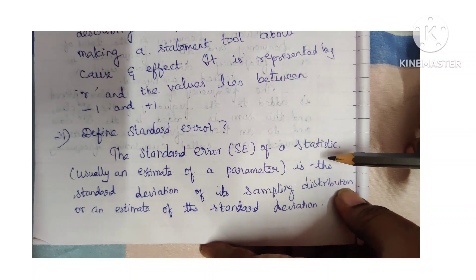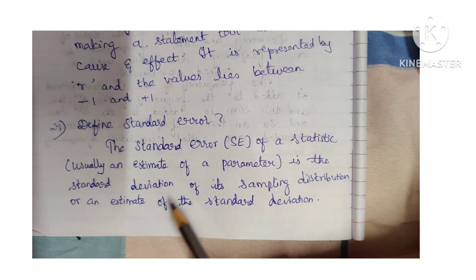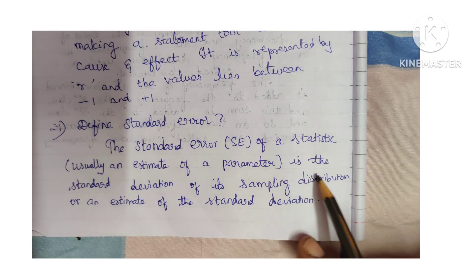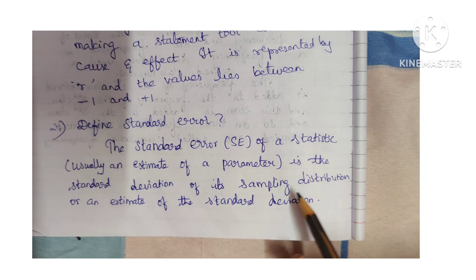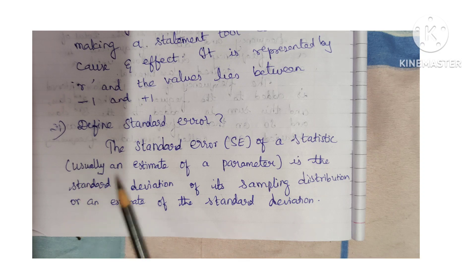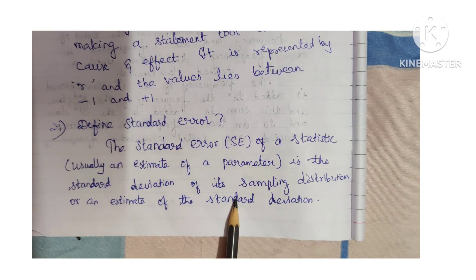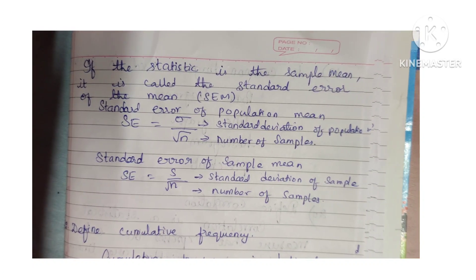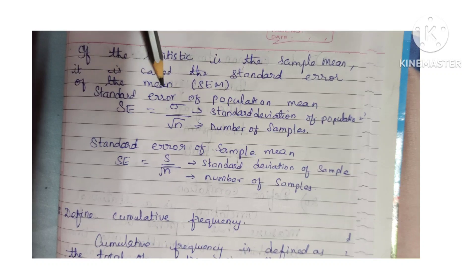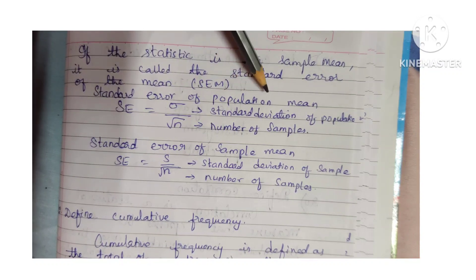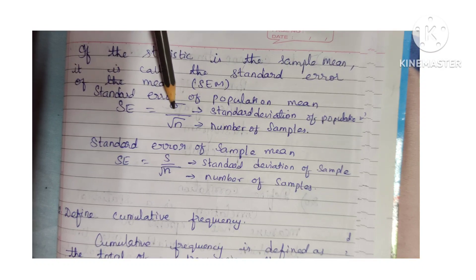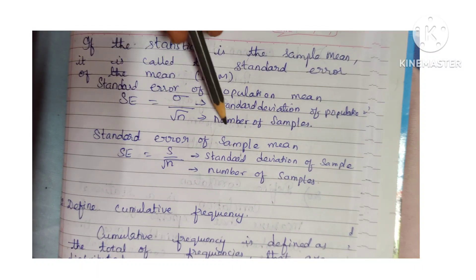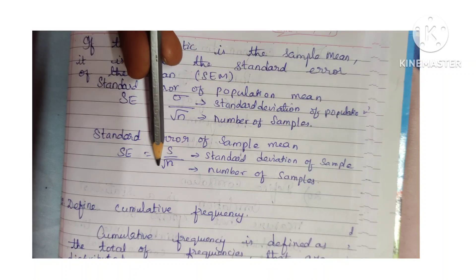Define standard error. The standard error of a statistic is usually an estimate of the parameter — it is the standard deviation of its sampling distribution, or an estimate of the standard deviation. If the statistic is the sample mean, it is called the standard error of the mean (SEM). Standard error of population mean equals sigma divided by square root of n; standard error of sample mean equals S divided by square root of n.